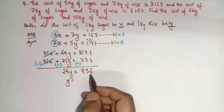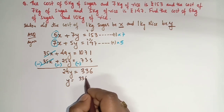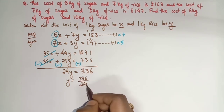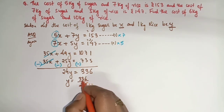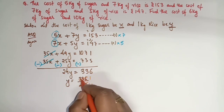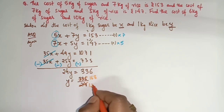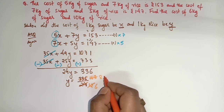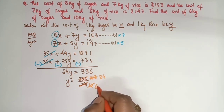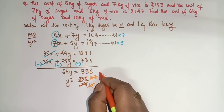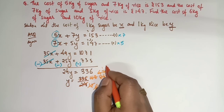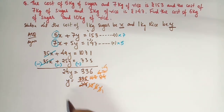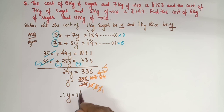So y = 336 ÷ 24 = 14. Now putting the value of y = 14 in Equation 1: 5x + 7y = 153. Putting y = 14: 5x + 7 × 14 = 153. 7 × 14 = 98. So 5x + 98 = 153. Therefore 5x = 153 − 98 = 55. So x = 55 ÷ 5 = 11. Therefore x = 11.